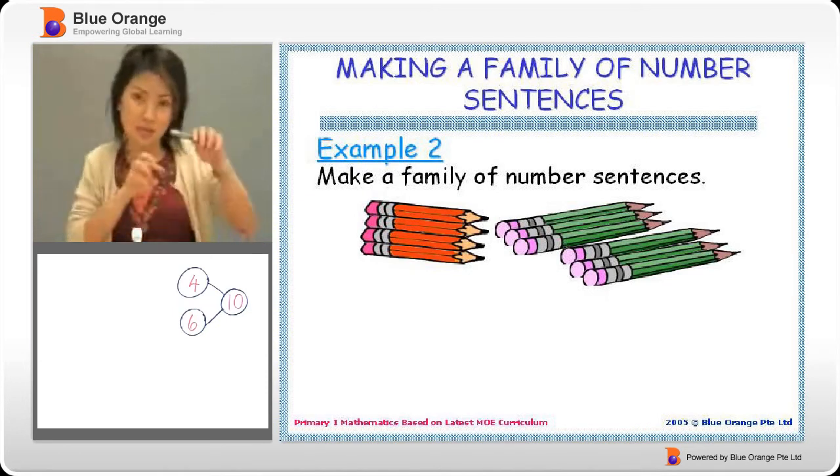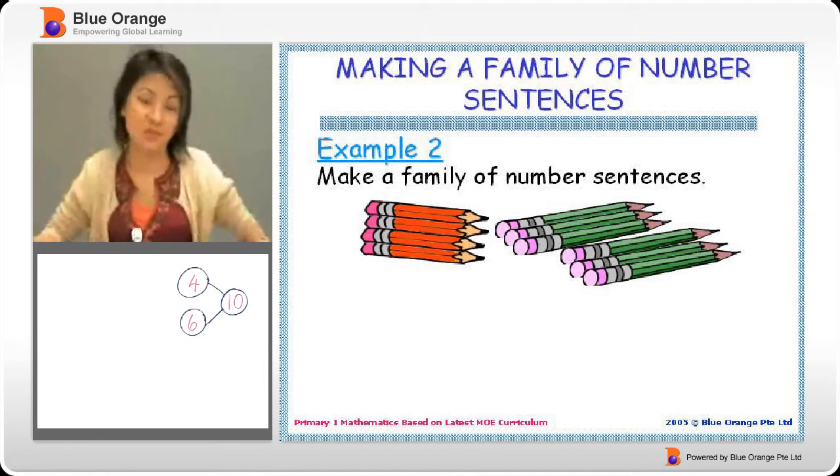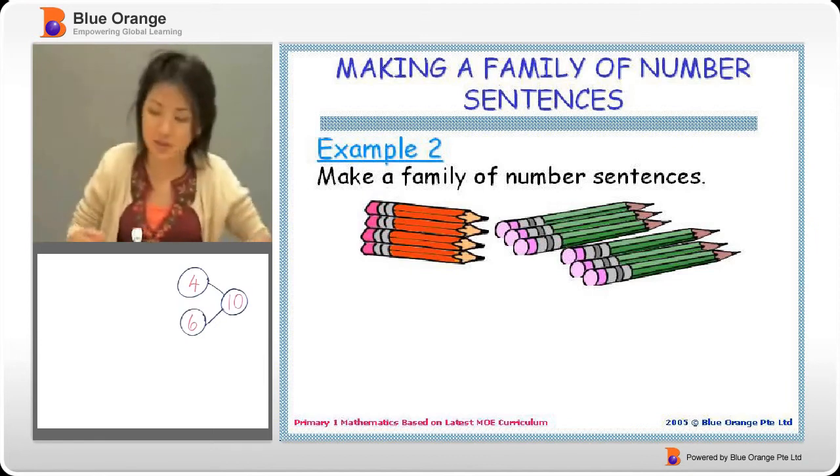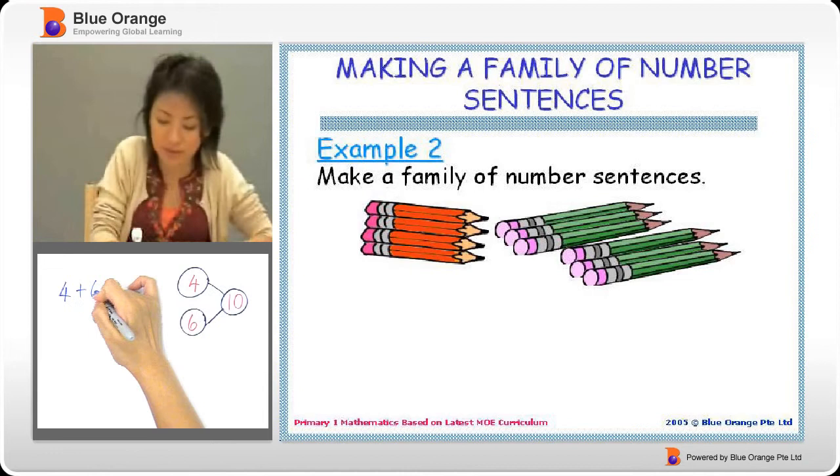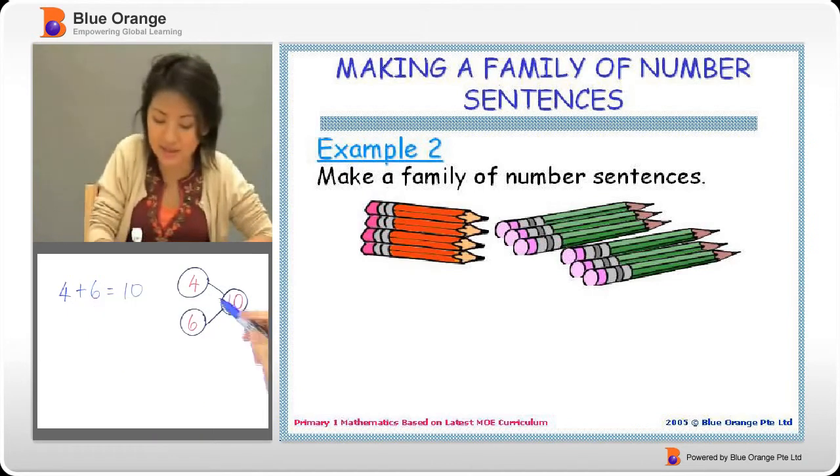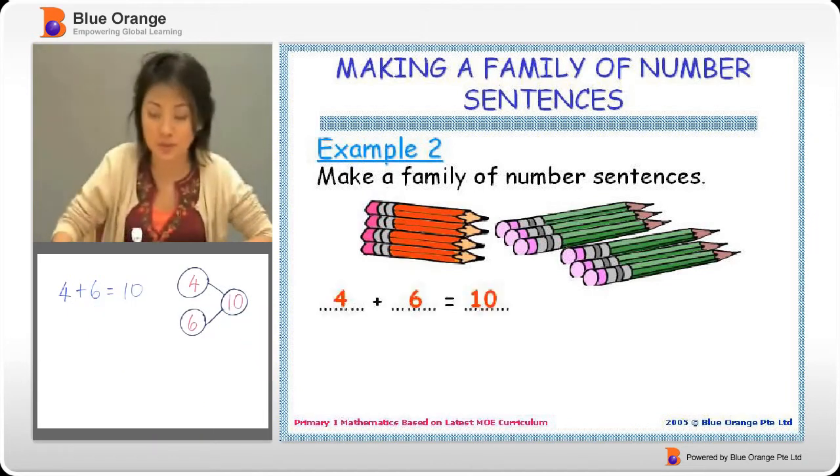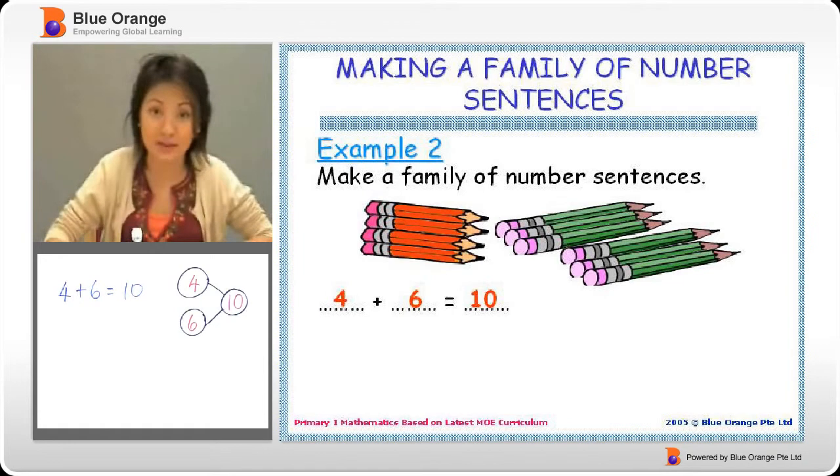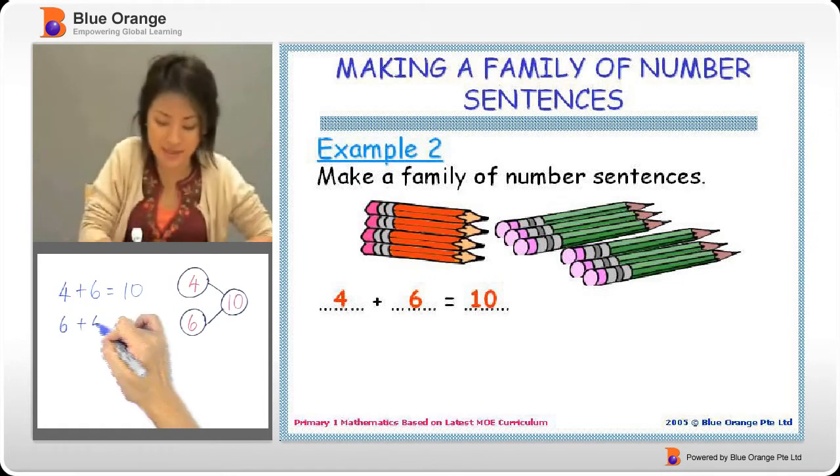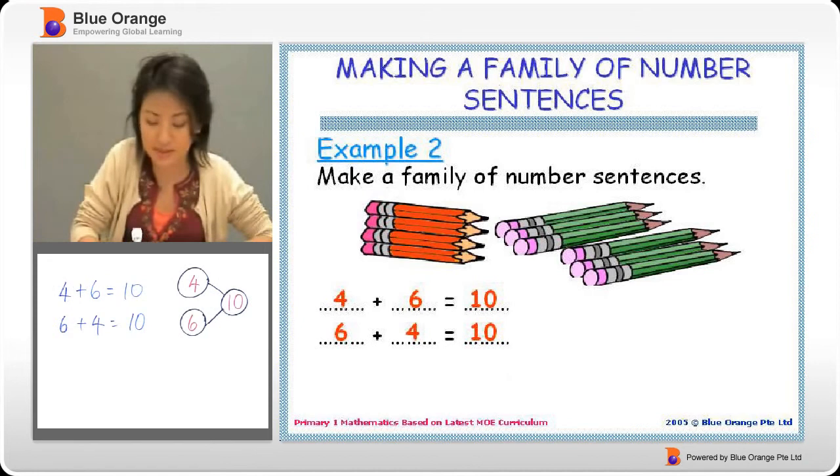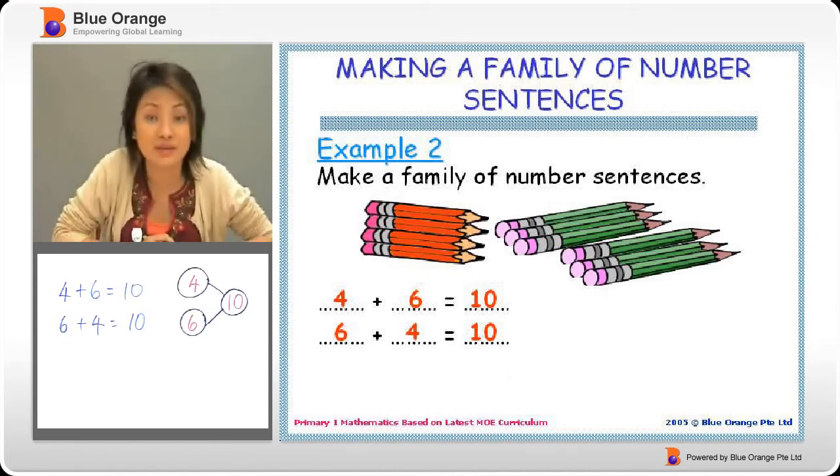Addition sentence means you take the two small parts to add up to make the big part. So here will be four plus six gives us ten. The two small parts add up to make a big part. Then we have six plus four equals ten.